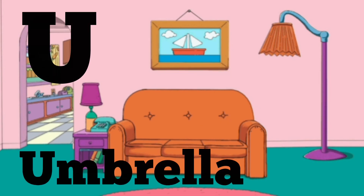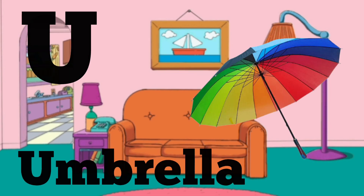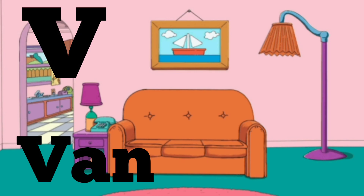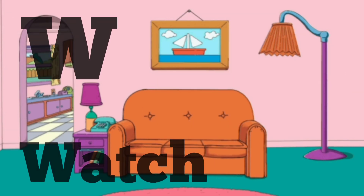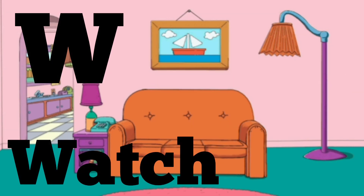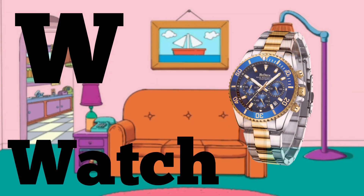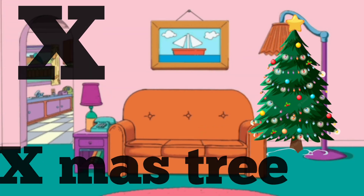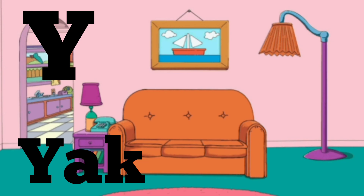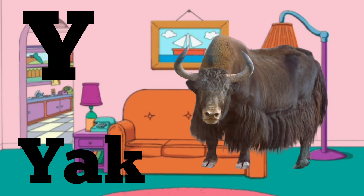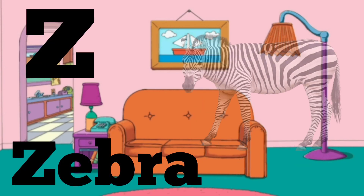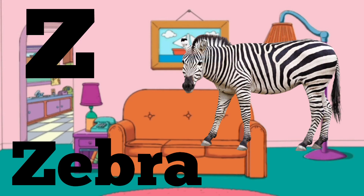T for tiger, U for umbrella, V for van, W for watch, X for xmas tree, Y for yak, Z for zebra.